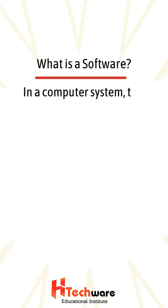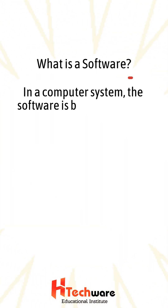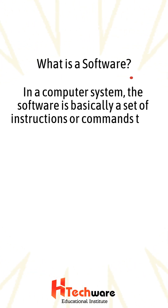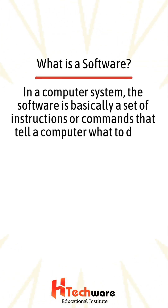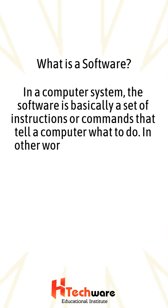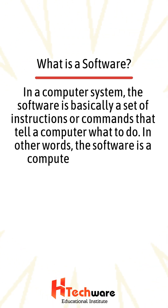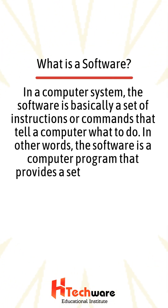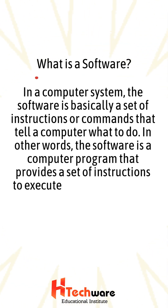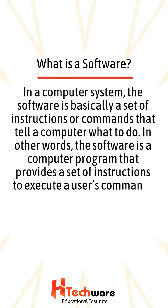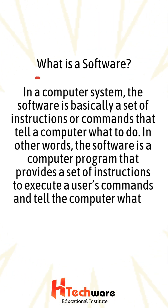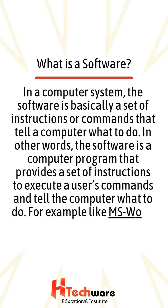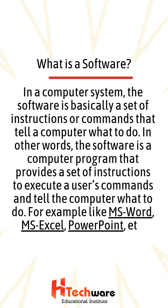What is software? In a computer system, software is basically a set of instructions or commands that tell a computer what to do. In other words, software is a computer program that provides a set of instructions to execute a user's commands and tell the computer what to do. For example, MS Word, MS Excel, PowerPoint, etc.